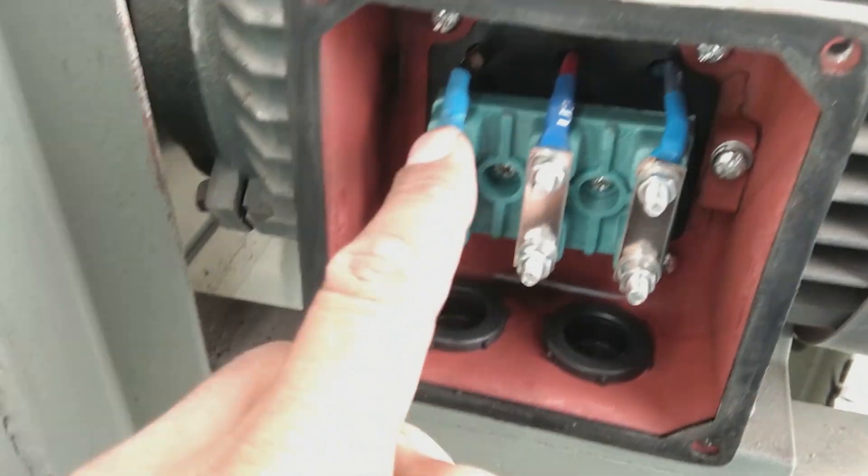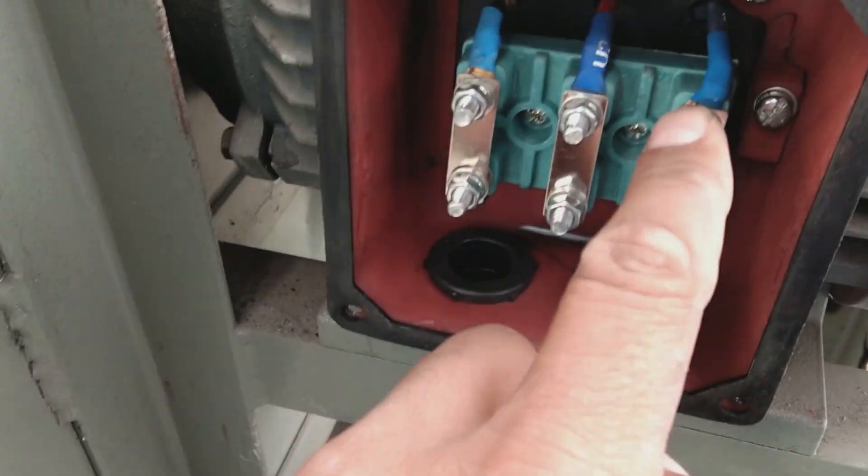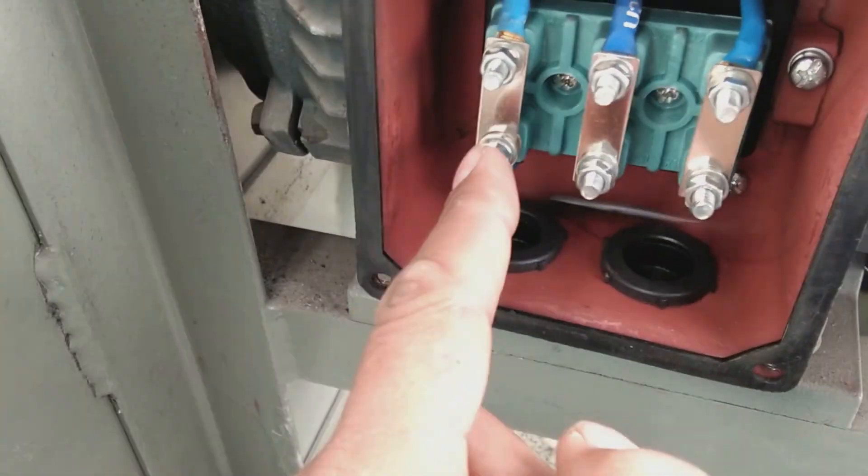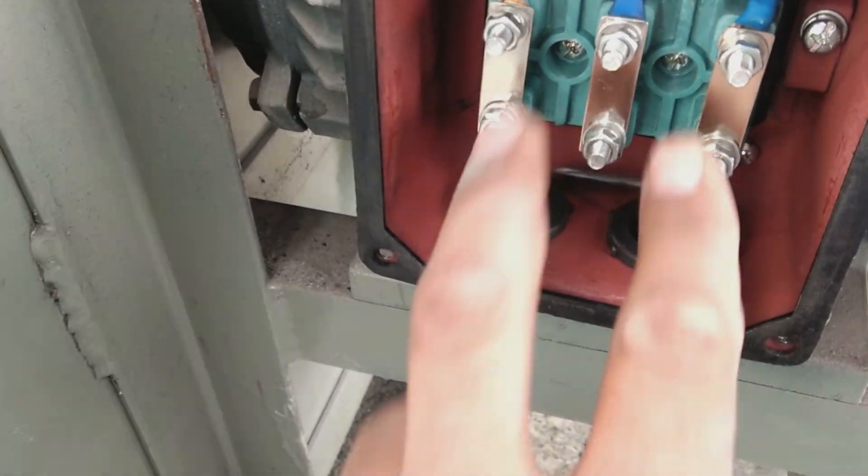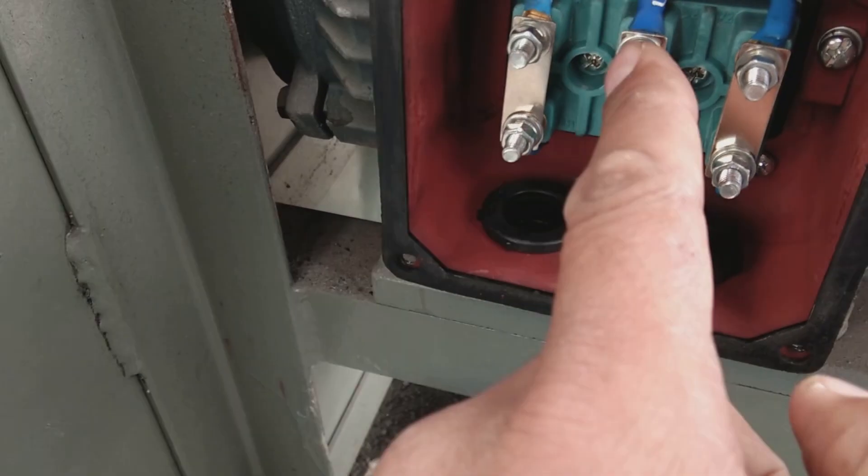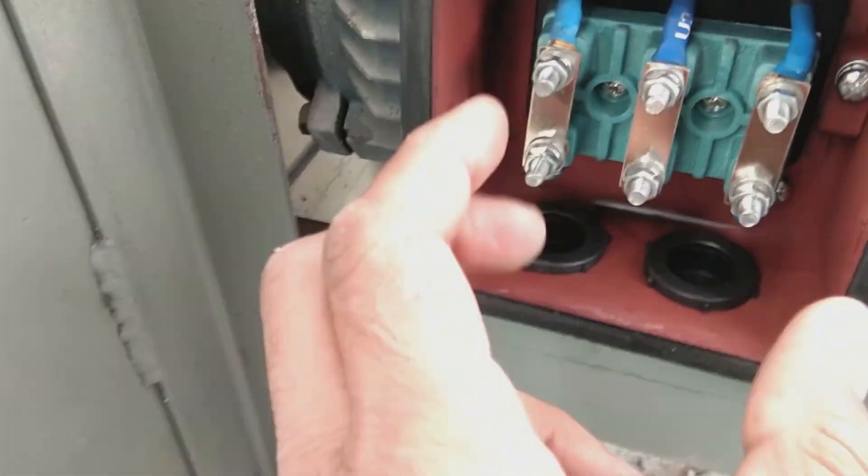Now we're coming to the terminal box. You can see these three plates or jumpers, these bus bars, are connected in one line. You'll connect the three-phase supply here. When they're in one line, it means this is delta connected.